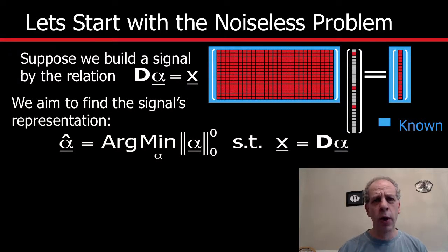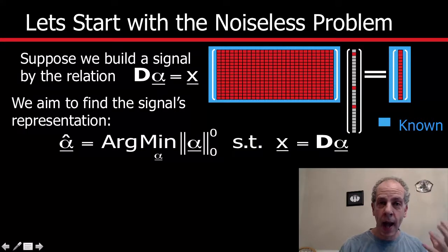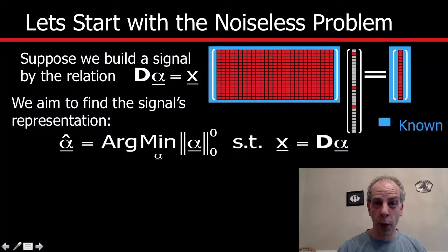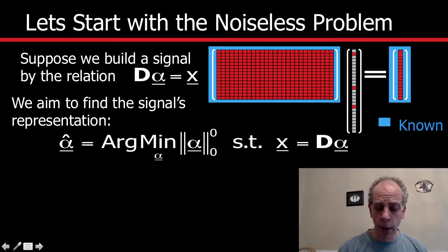As we'll discuss later, we're going to talk about how to compute the dictionary itself. As we have seen in the previous video, we want to compute the alpha that has the smallest possible number of non-zero coefficients — that's also called the support. We assume there is no noise right now; we have just generated this signal. So it's the ideal scenario.